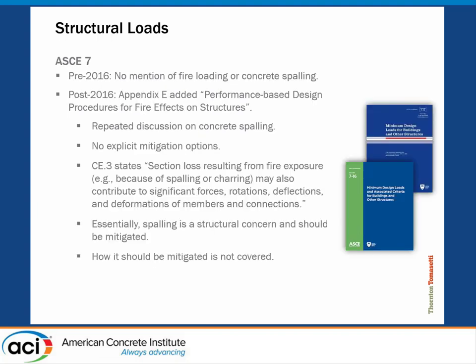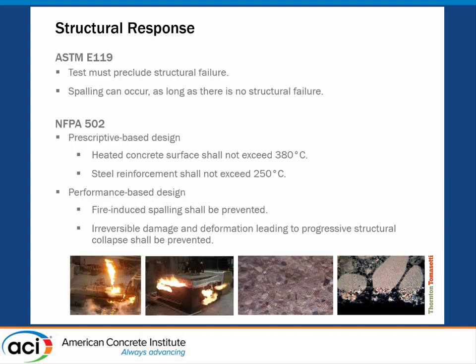ASCE 7 — pre-2016, no mention of fire loading anywhere in the document, so of course no mention of concrete spalling. Post-2016, we have Appendix E, which added performance-based design procedures for fire effects on structures, and here concrete spalling is discussed throughout the appendix. The problem is we still don't have explicit mitigation options. They say it's a problem, you need to look at it, here's what could cause it — essentially, good luck. They define things like section loss resulting from fire exposure due to spalling may contribute to significant forces, rotations, deflections, and deformations. That's pretty much the limit of how they address it.